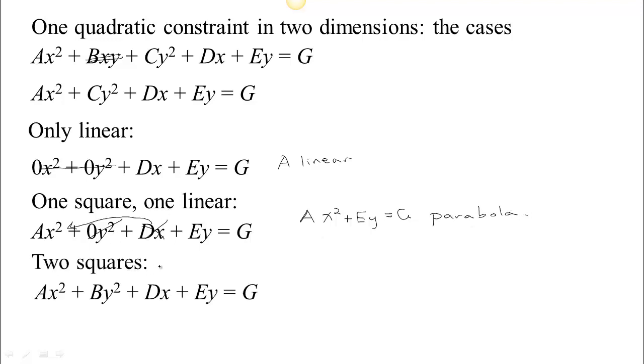If we have two squares, then we could always complete the square, so we might as well ignore this term, because it could be absorbed into that by completing the square, and this term could be absorbed in. And so we are going to have something like, we might as well ignore those linear ones and just say what's going to look like ax squared plus by squared equals g.